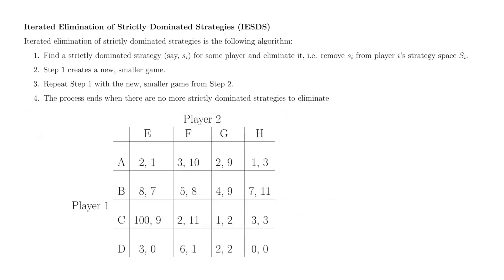Here is a larger game for you to practice IESDS. This game will be one of the few that does not have an economic story behind it — it is just for practice. For a larger game, it is often helpful to write down the order in which you eliminated strategies, so that you can reconstruct your thought process more easily later, or find where a mistake occurred in order to fix it. Pause the video and use IESDS to find the unique Nash Equilibrium of this game. When you are done, resume the video to see a solution.